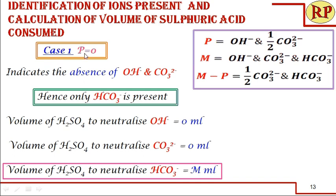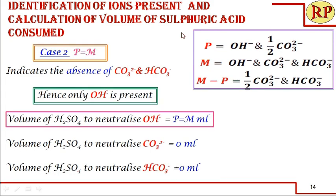Case 1: P = 0. When you add phenolphthalein and it is not pink but colorless, yet alkalinity is still present, it means hydroxide and carbonate are absent. The only possibility is that only bicarbonate is present. Whatever volume of sulfuric acid is consumed after adding methyl orange indicator — that is M ml — is entirely for the neutralization of bicarbonate.